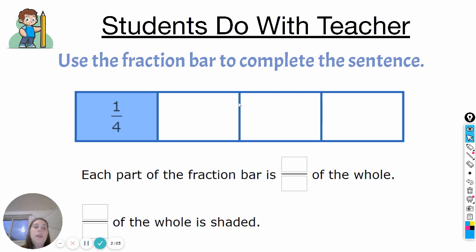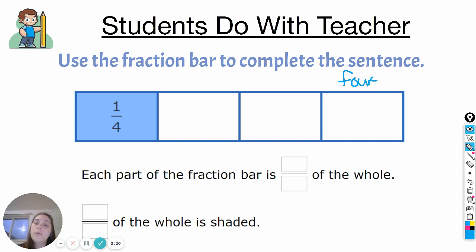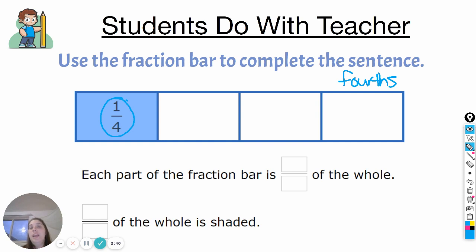Use the fraction bar to complete the sentence. This one looks a little bit different — you can see that this fraction bar has one, two, three, four equal pieces, so this is broken up into fourths. If you look at your fourths fraction strip, you'll see that each piece is labeled one out of four, or one-fourth. They've labeled one of those pieces and shaded it in for you. Each part of the fraction bar is blank of the whole — go ahead and write on your whiteboards what fraction you think goes in this spot.